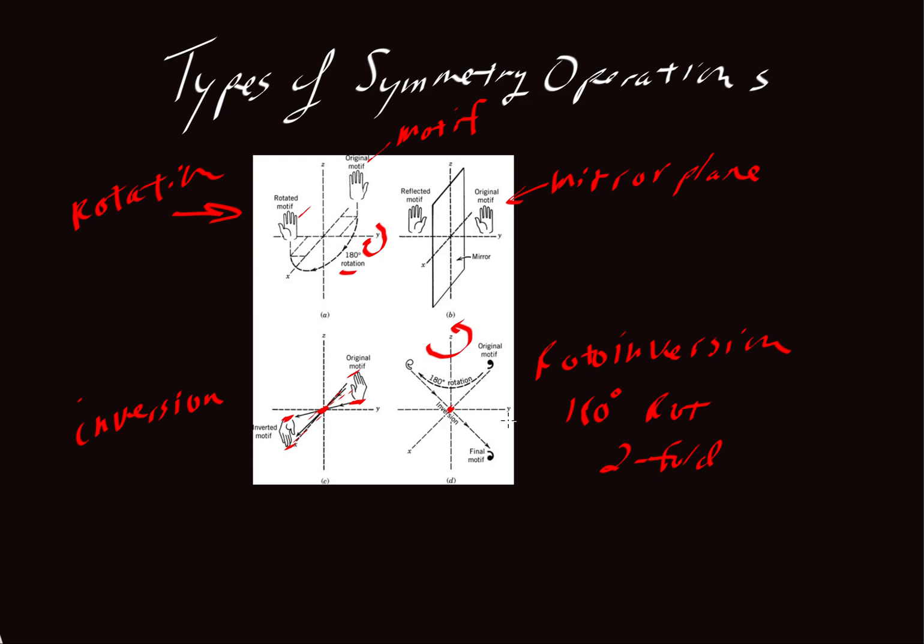So we get two motifs, one up here, the original, and this guy over here. There's nothing that actually ends up existing in this part of the system under this rotoinversion.